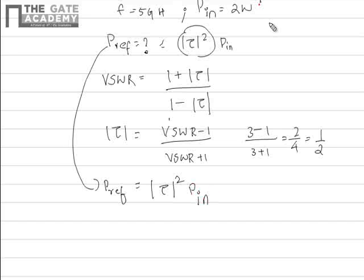Now we know the value of Pin. Substituting that value, we have (1/2)² times 2. So the final value would be 0.5 watts. The correct answer is option A.